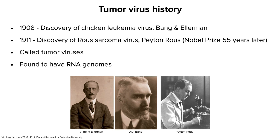This story begins way back at the beginning of the 1900s with two discoveries. The first, in 1908, was the discovery of a virus that causes leukemia in chickens by Bang and Ellermann — this was the first cancer virus discovered. A few years later, Peyton Rous discovered another virus that causes cancer — a solid cancer called a sarcoma — named Rous sarcoma virus. He was working right here in New York at the Rockefeller Medical Institute. 55 years later, he got the Nobel Prize, the longest incubation period for a Nobel Prize ever.